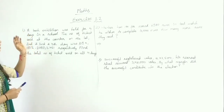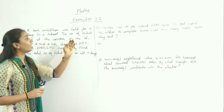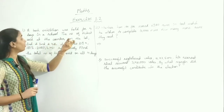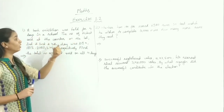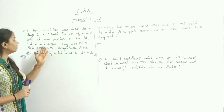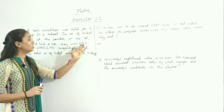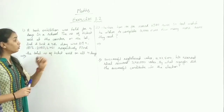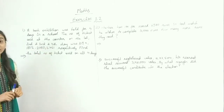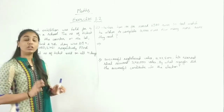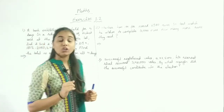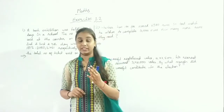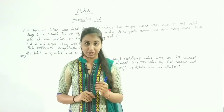So the first question is: the book exhibition was held for 4 days in a school, and the number of tickets sold at the counter on the 1st, 2nd, 3rd and 4th day was 1094, 1812, 2050 and 2751 respectively. So we have the number of tickets sold for 4 days.